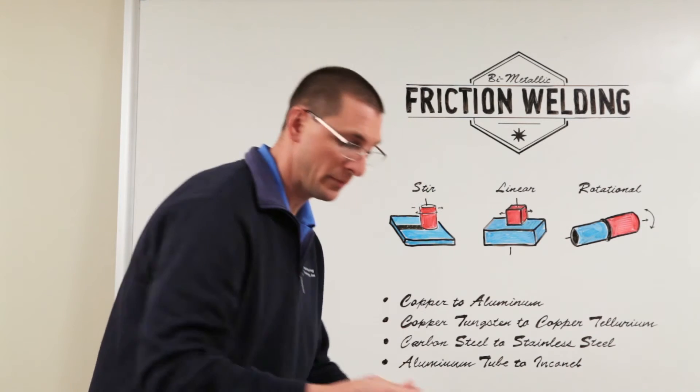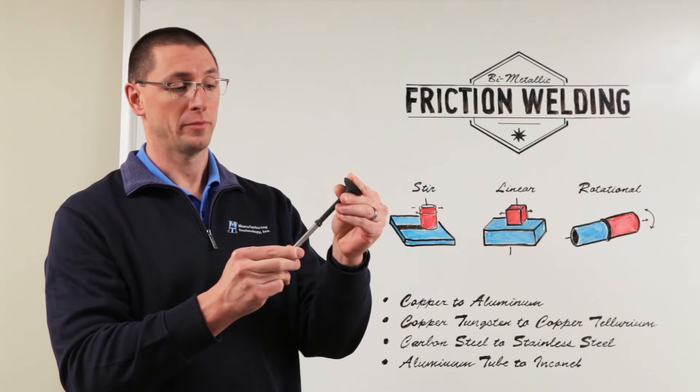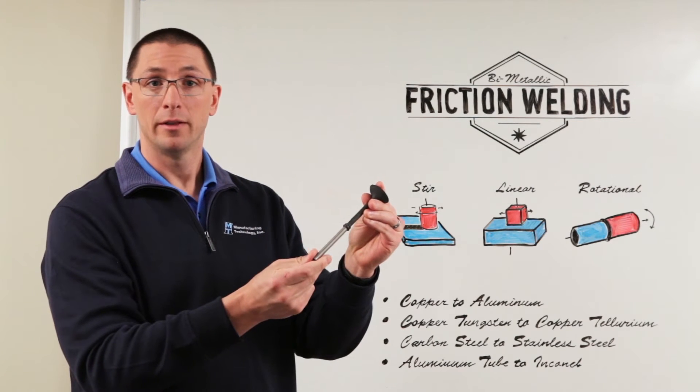Another example might be a bimetallic motor or engine valve where you have a wear resistant alloy and a heat resistant alloy that are welded together.